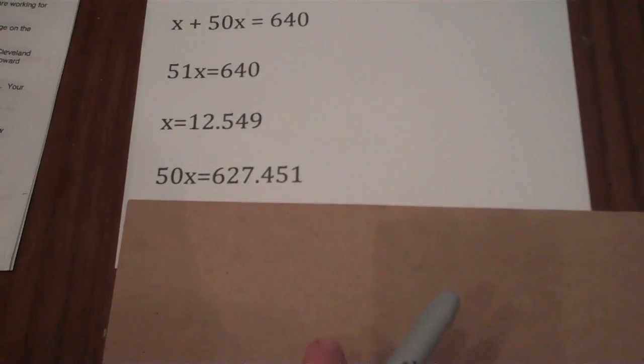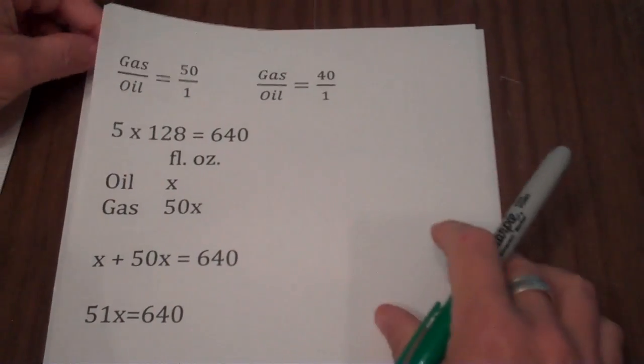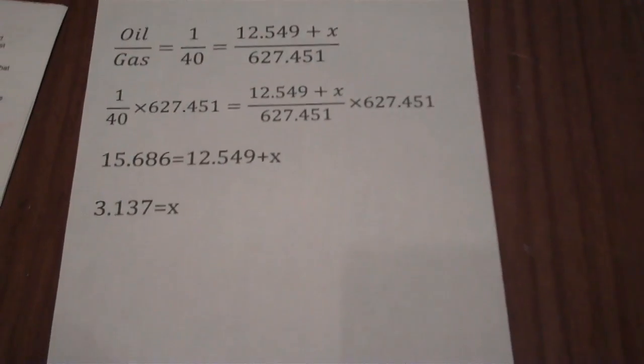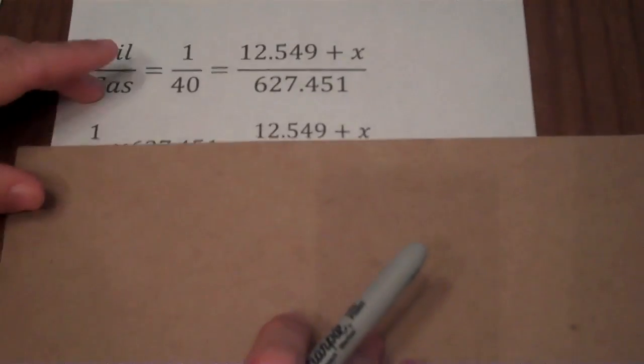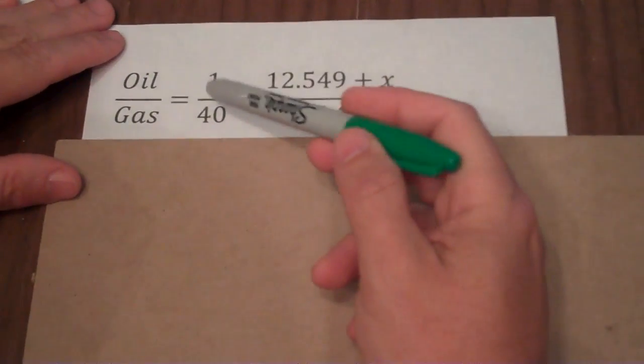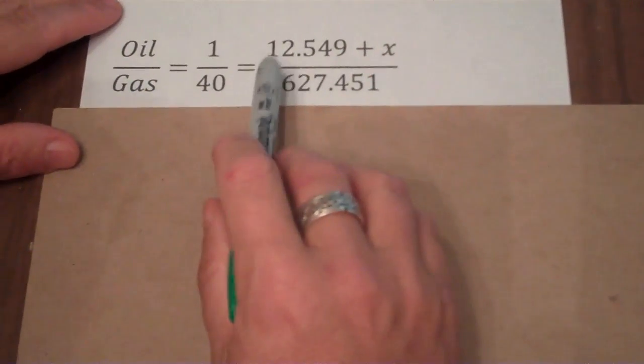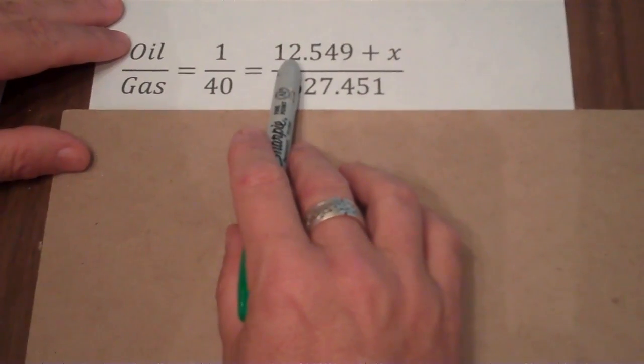Now let's set up the equation. Remember, the desired ratio of gas to oil was 40 to 1. So since my desired ratio of oil to gas is 1 to 40, I'm going to go ahead and put the amount of oil on top.